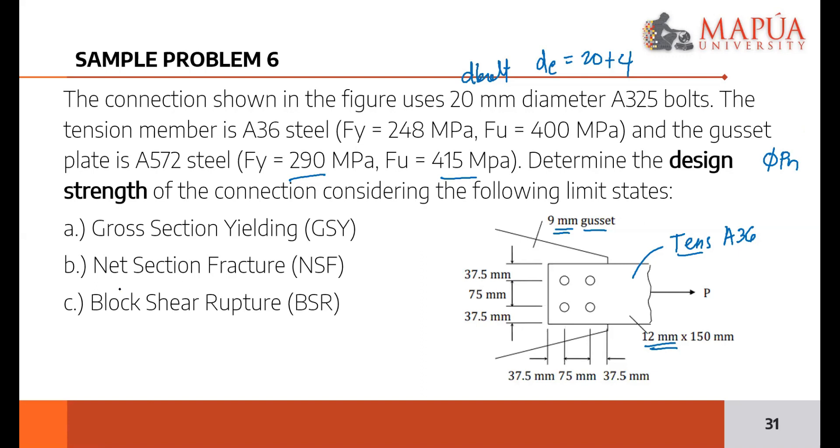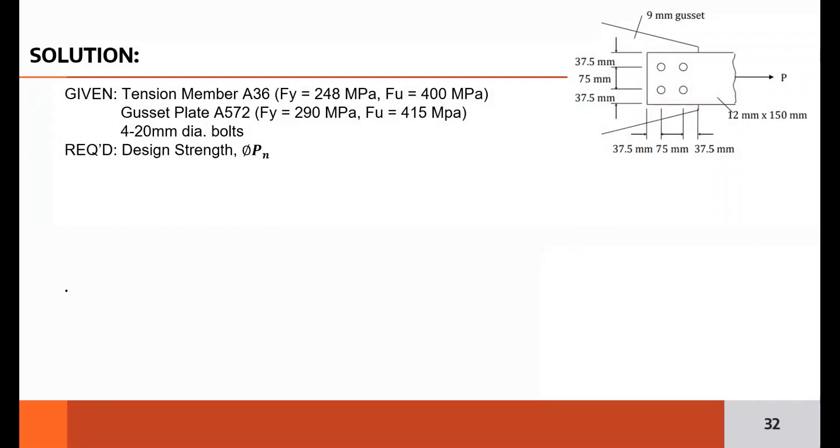Considering the following limit states: GSY, NSF, and the new one, block shear rupture. Okay, so let me start with GSY. I'll take the GSY of the tension member specifically. Why? Because the FY of the tension member is smaller. So it's possible the tension member is more critical. Although, the gusset plate could also be critical because it's thinner - 9mm versus 12mm.